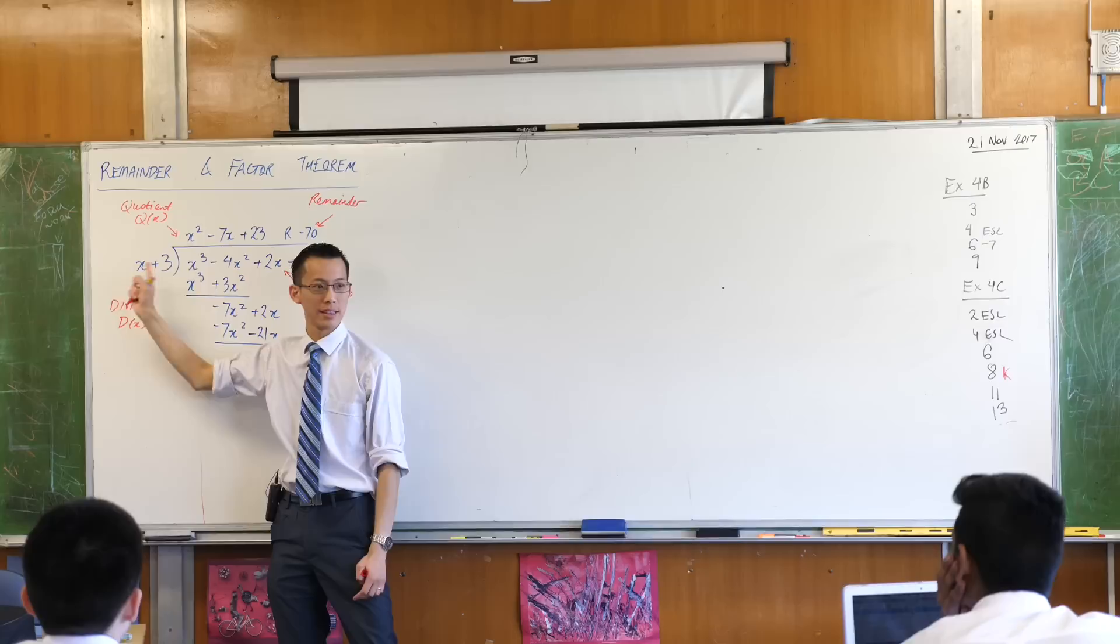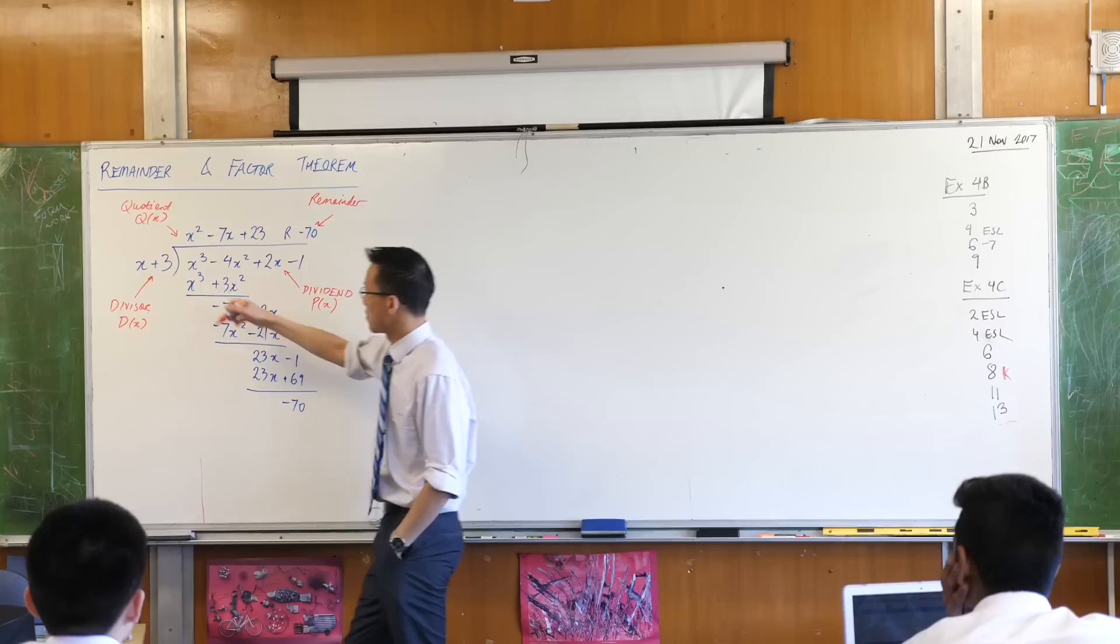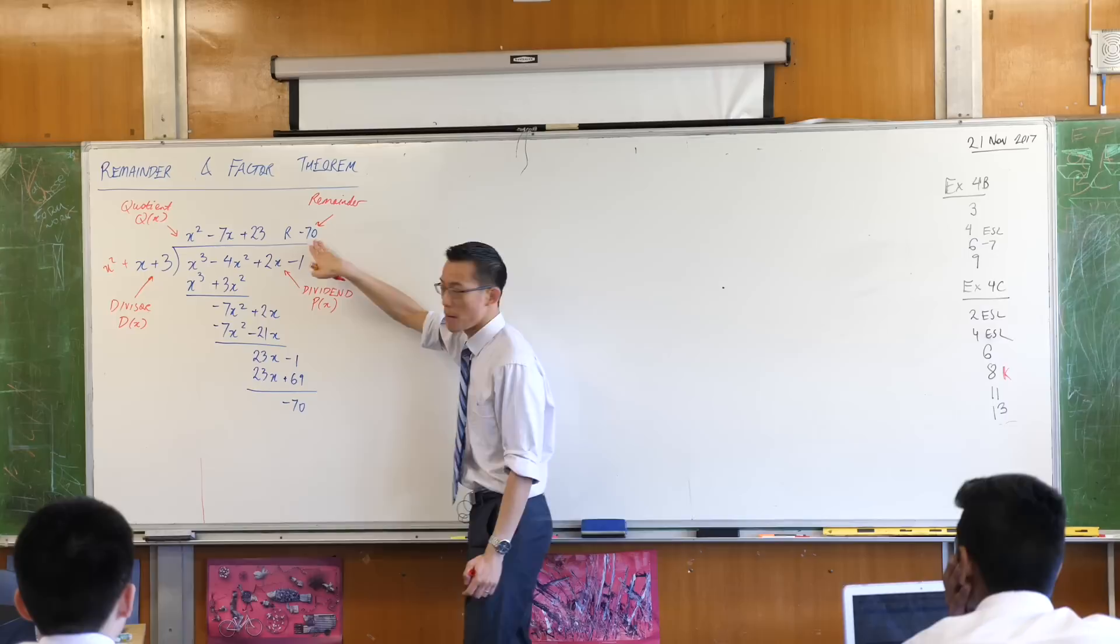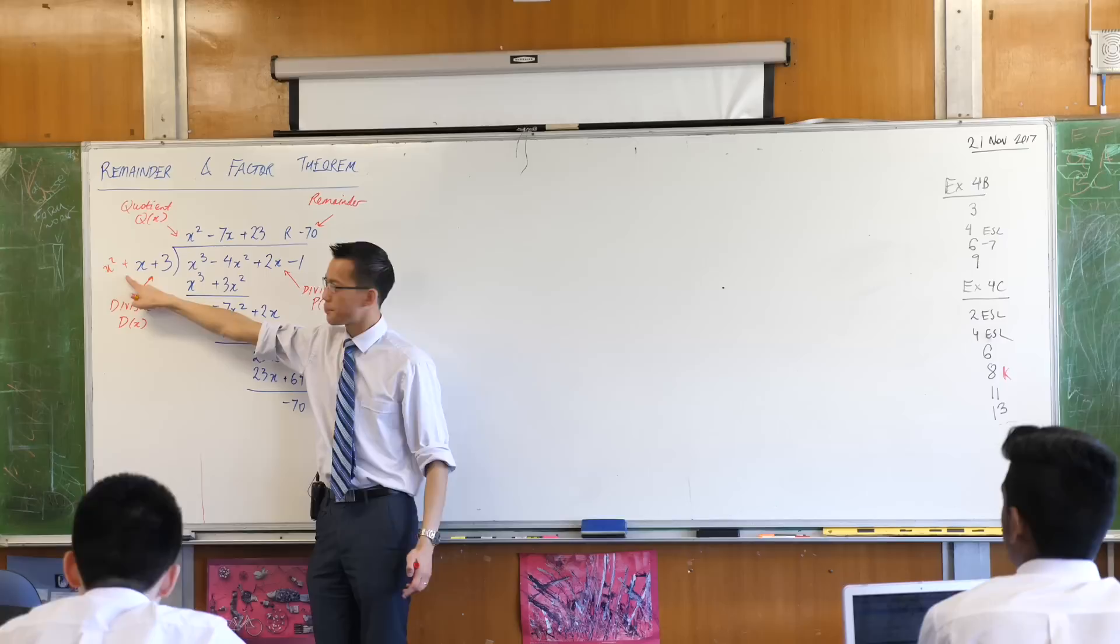In this case, it's a number because I was dividing through by something linear, but if my divisor was not linear, if my divisor was say a quadratic, X squared plus X plus 3, I could have done that. If you have a quadratic divisor, your remainder might not be just a number. What might it be? It might have some X terms in there.